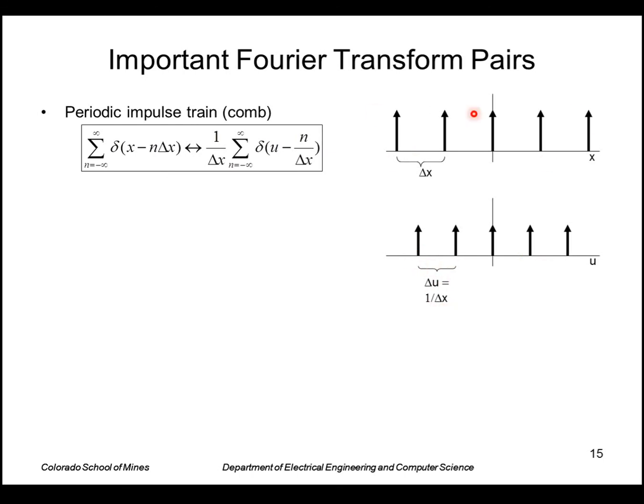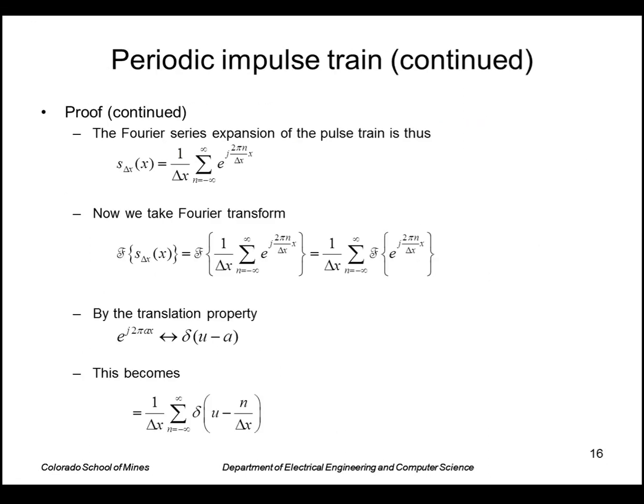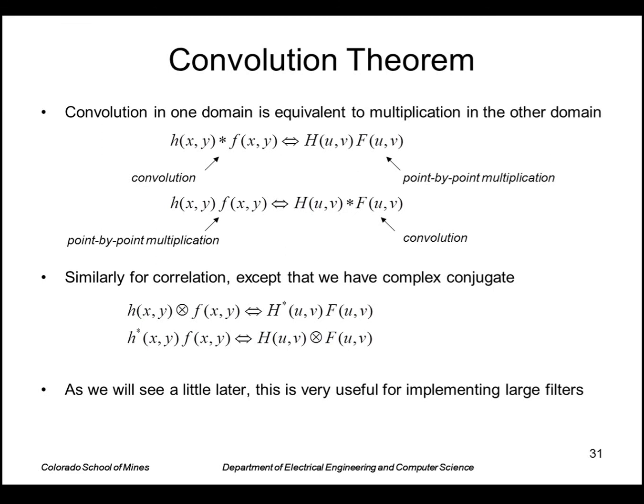So the wider the spacing gets, the narrower the spacing is. And just showing the proof here, I won't go into that. Finally, the convolution theorem is very important. It says that convolution in one domain is equivalent to multiplication in the other domain. So if I have a filter, let's say small h(x,y) convolved with an image f(x,y),